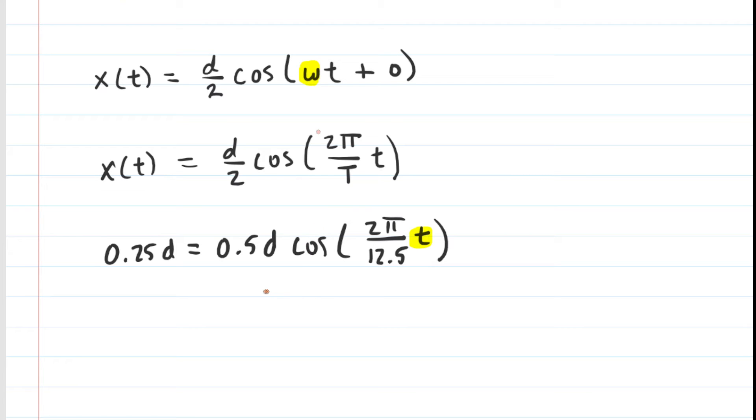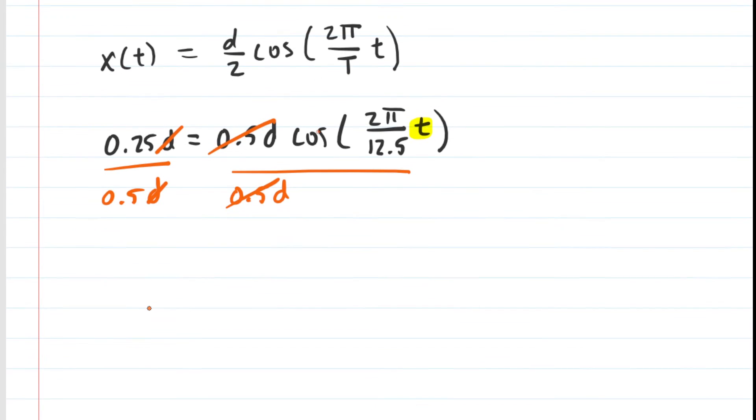So to begin solving that, we could actually divide both sides of this equation by 0.5d. Doing so would cancel out the 0.5d on the right-hand side, cancels these d's on the left side. And then, of course, 0.25 divided by 0.5 is 0.5. So we have 0.5 is equal to the cosine of this 2π over 12.5 times t.